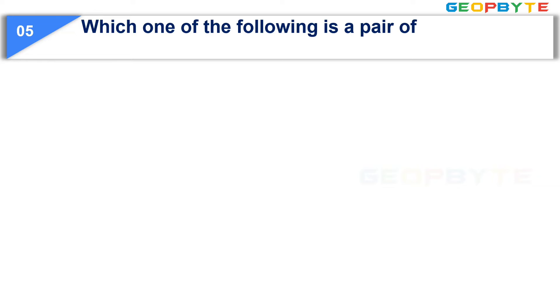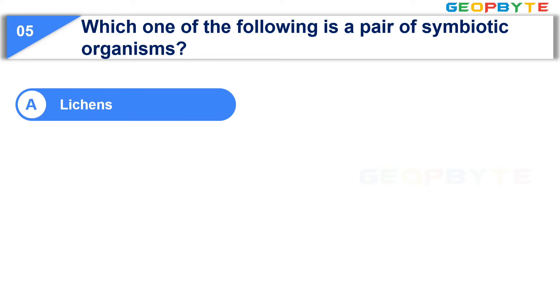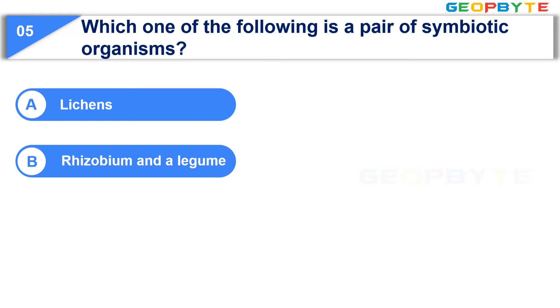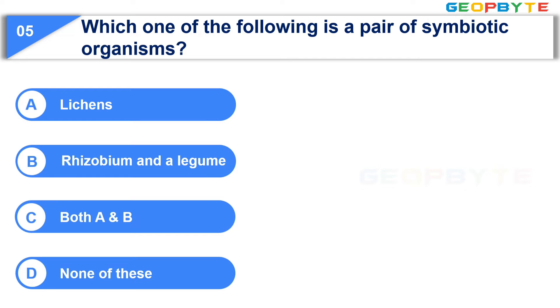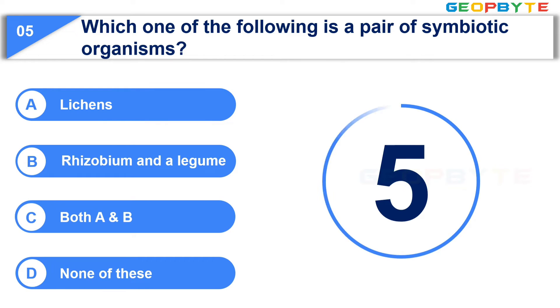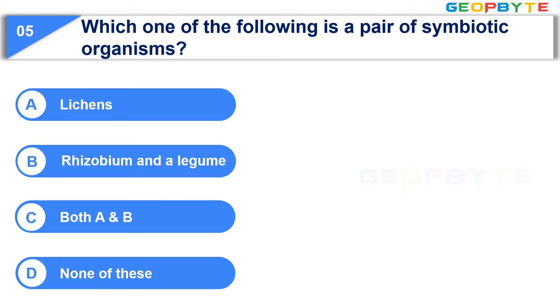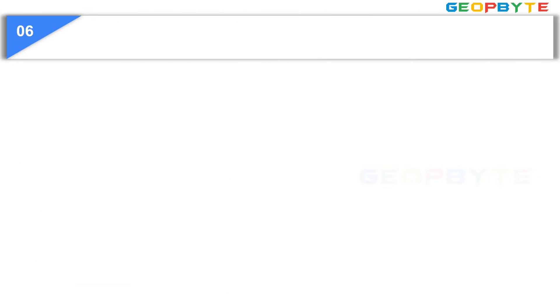Moving to the next question: Which one of the following is a pair of symbiotic organisms? Option A: Lichians. Option B: Rhizobium and Legume. Option C: Both A and B. Option D: None of these. Your time starts now. Your time is up and the correct answer is Option C: Both A and B — that is Lichians and Rhizobium and Legume.